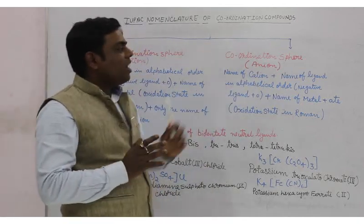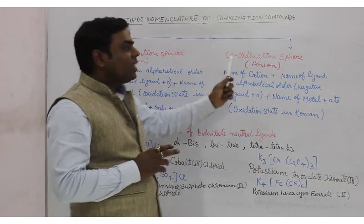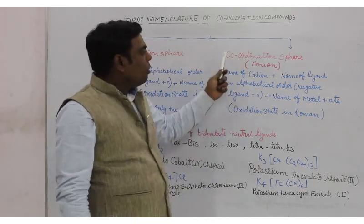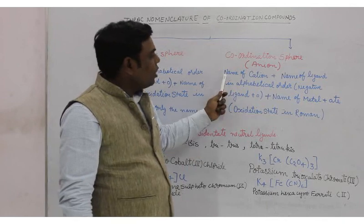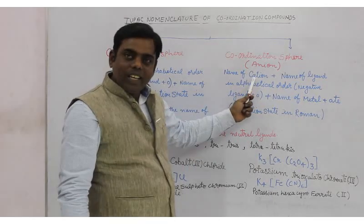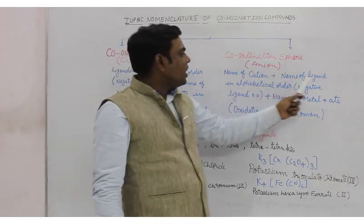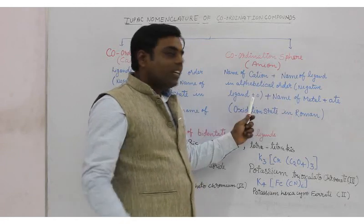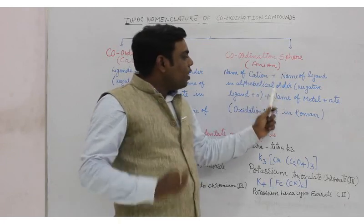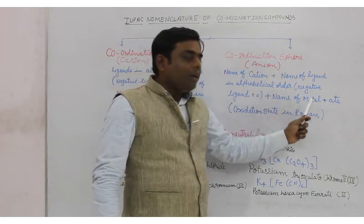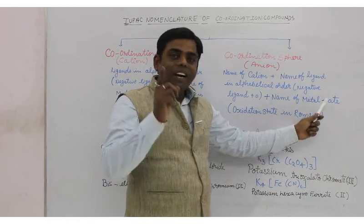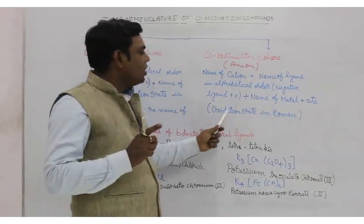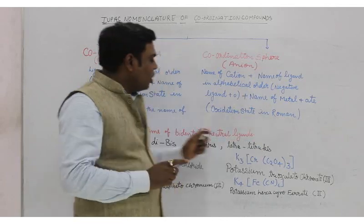If the coordination sphere is negative — that is, it is an anion — then you write the ligand names in alphabetical order, add 'O' for negative ligands, and for the metal name you add the suffix '-ate' instead of the plain metal name. The oxidation state is still written in Roman numerals.